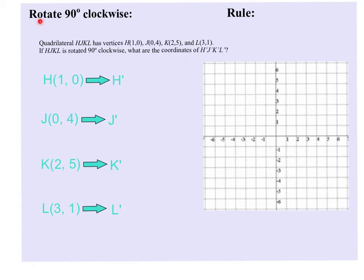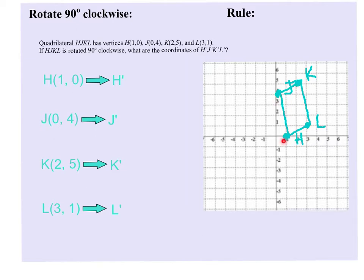For this example, we're going to do a 90 degree clockwise rotation. Pause the video for a minute and put H, J, K, and L onto your graph, and I will do the same. When we do our rotations, our fixed point is always going to be the origin. We want to take this four-sided figure and rotate it clockwise, to the right, around the origin, so that it comes out to a 90 degree rotation.